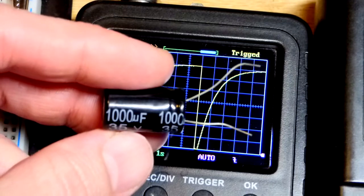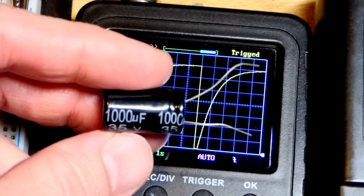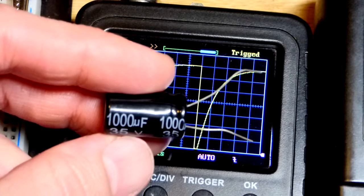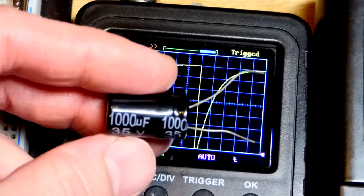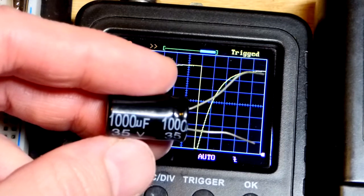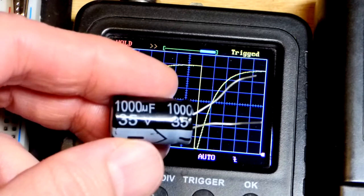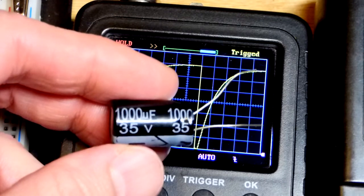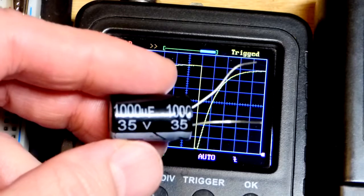Here's the capacitor, I pulled it out of the board. 1000 microfarad, which is the same as one millifarad, or one one-thousandth of a farad. I don't know why they keep using microfarads instead of millifarads. We could charge it up to 35 volts.